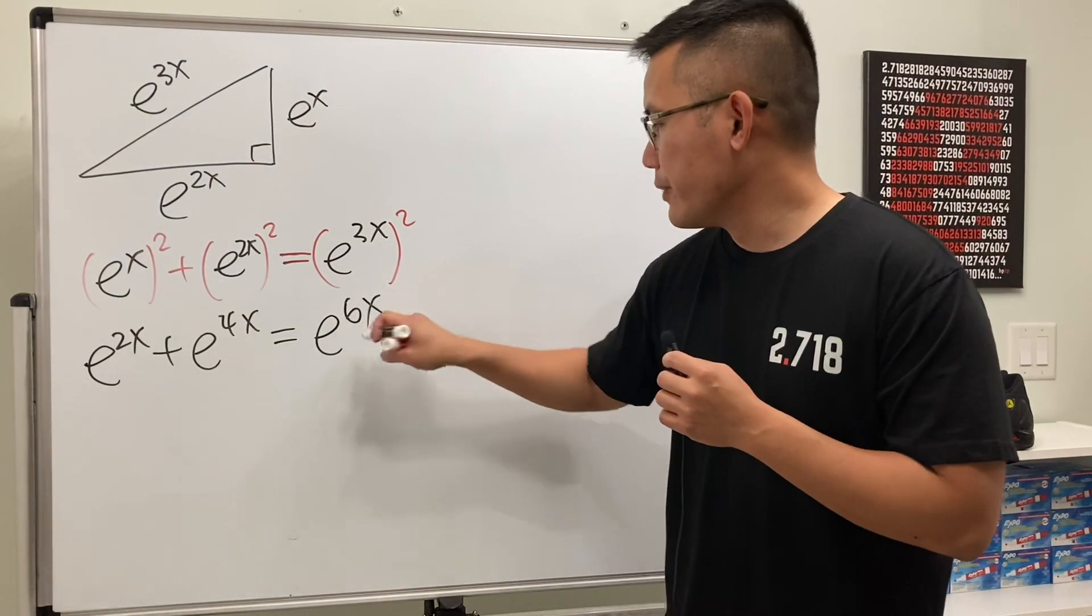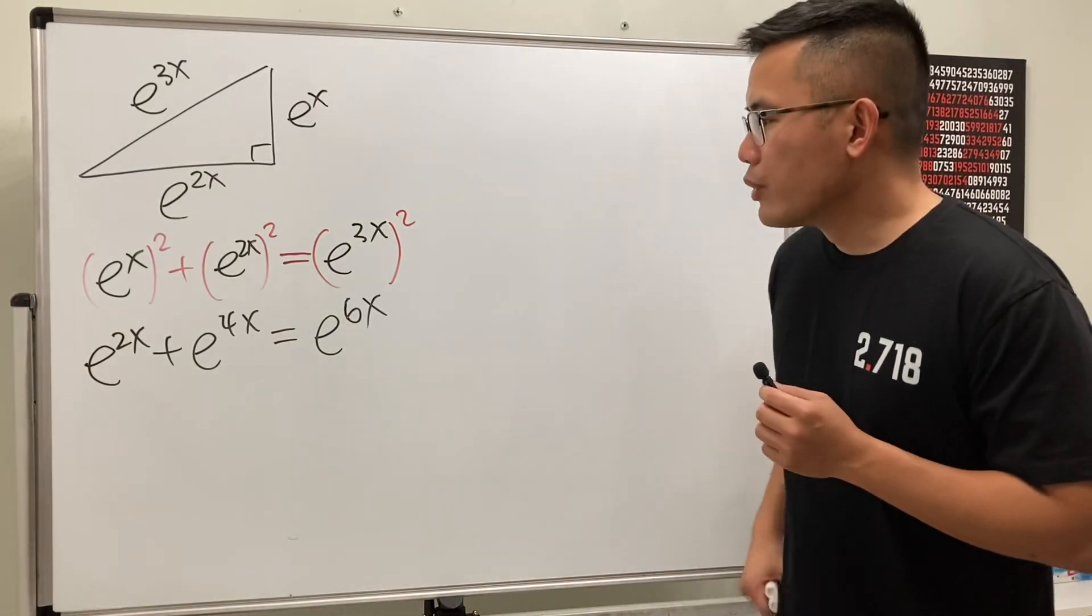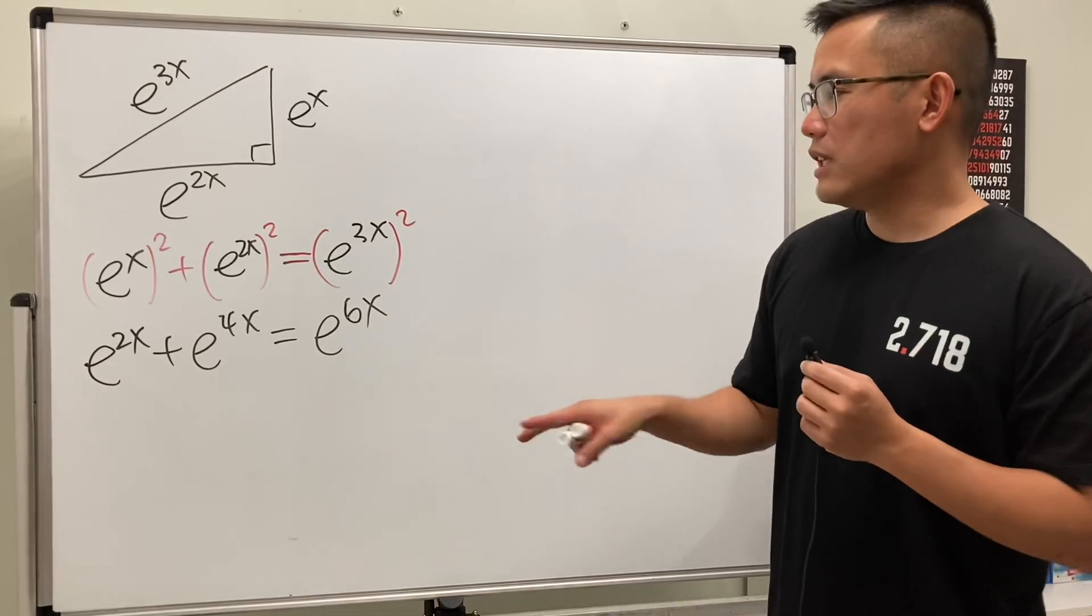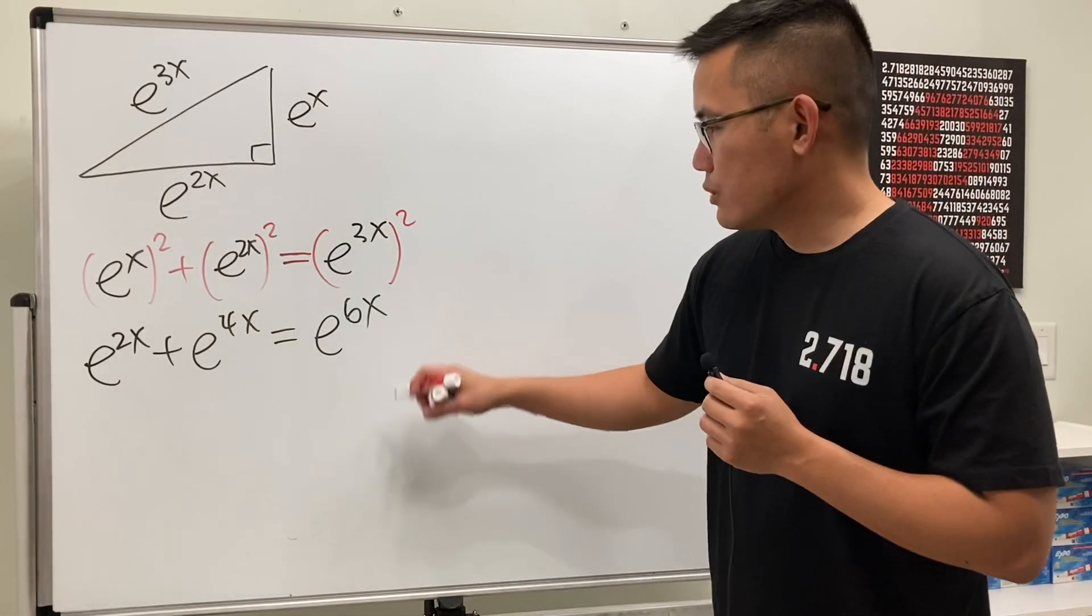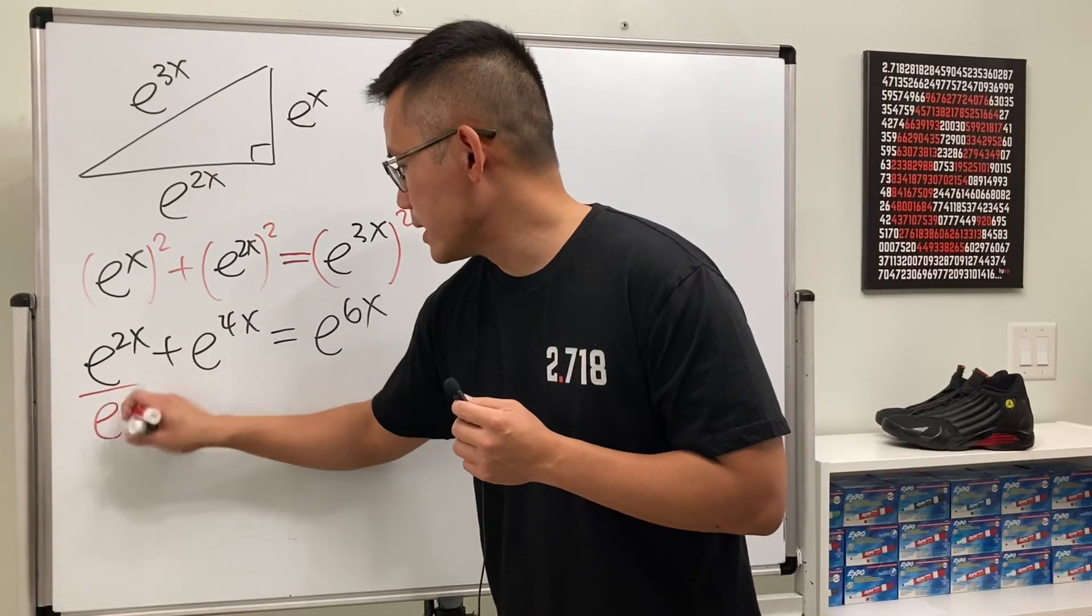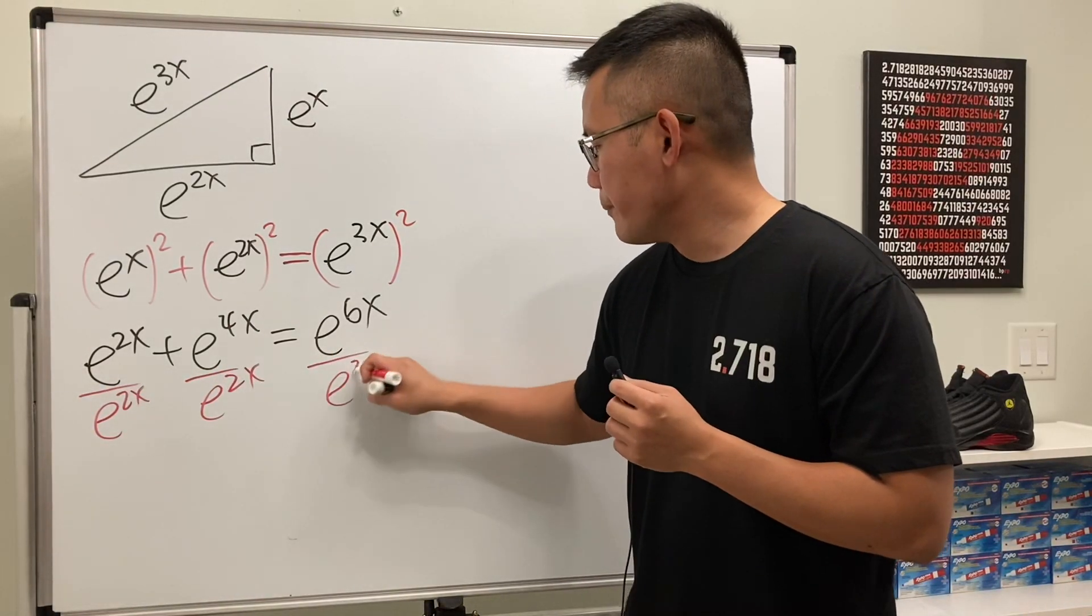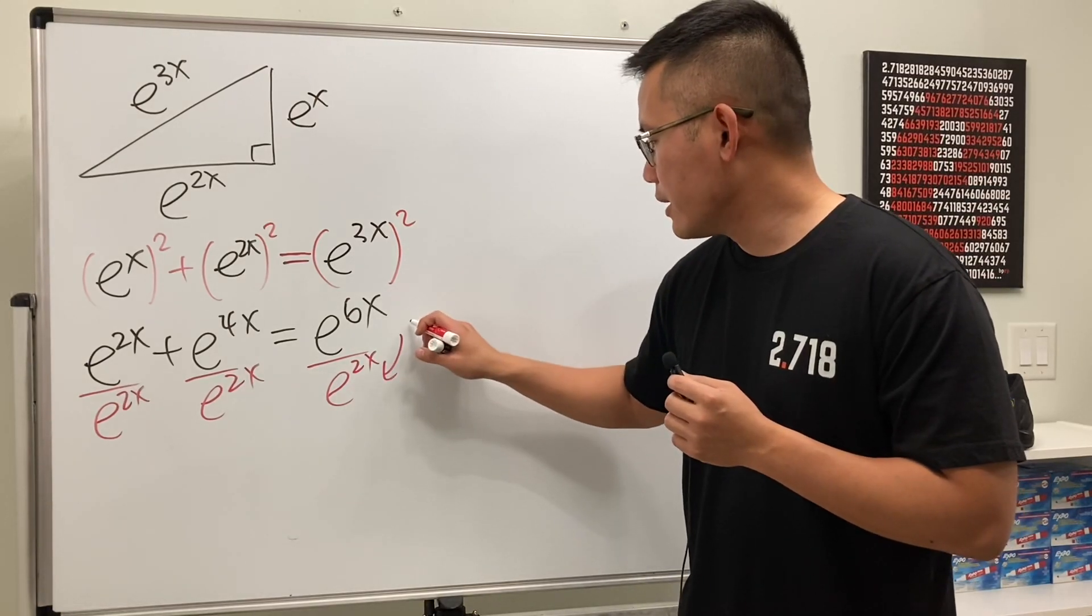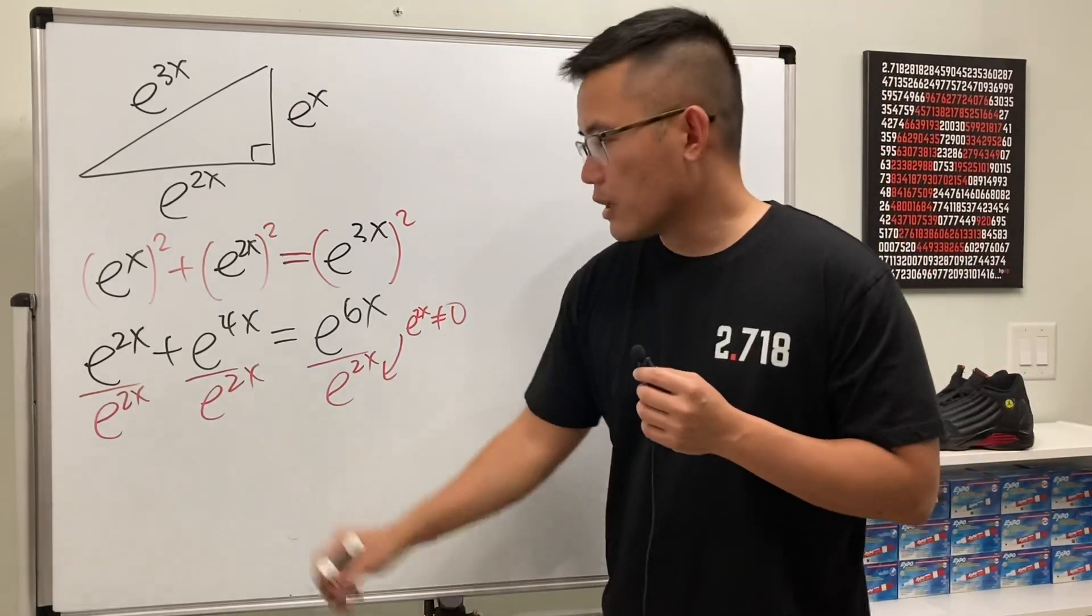So if we can solve this equation then we will be done. Now to make this easier, we are going to just divide everybody by e to the 2x. So I will just write this down, let's just go ahead and divide everybody by e to the 2x, and we can do this without any worry because e to the 2x is never equal to zero, so we can totally divide.